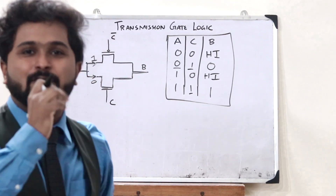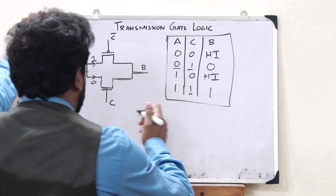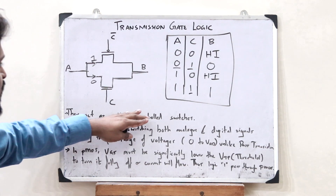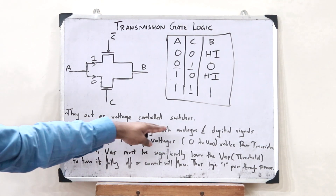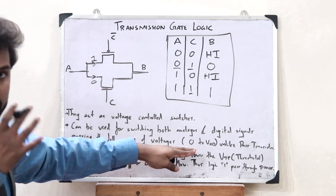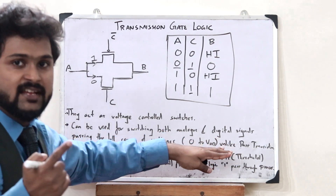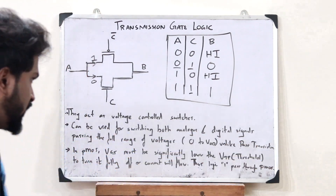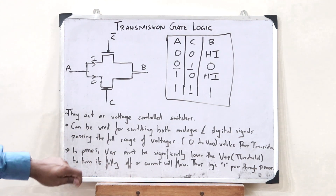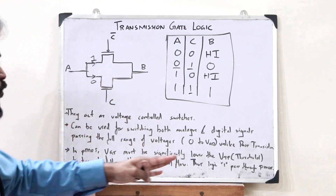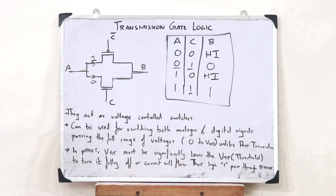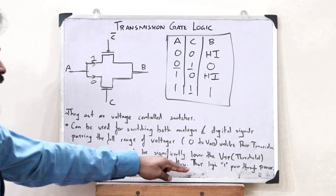This is simply how a CMOS transmission gate works. CMOS transmission gates act as voltage-controlled switches. They can be used for switching both analog and digital signals, passing the full range of voltages from 0 to VDD, unlike single MOS devices like a pass transistor. For a PMOS transistor, the gate-to-source voltage must be significantly lower than the threshold voltage VTP to turn it fully off, or else current will still flow.